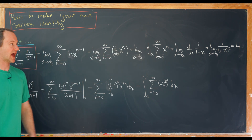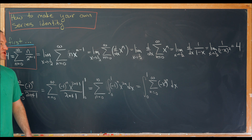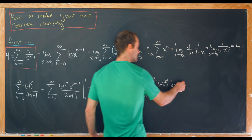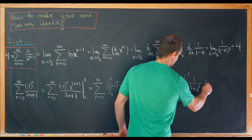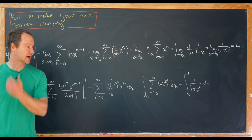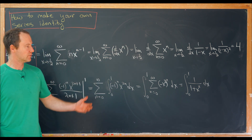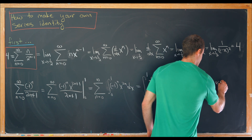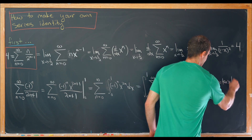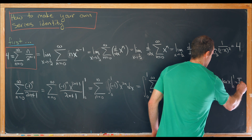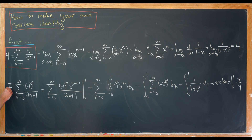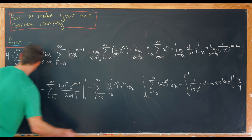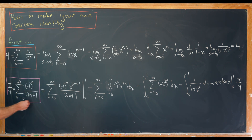Instead of the common ratio being x like before, the common ratio is now minus x squared. So this sums to 1 over 1 minus the common ratio, which is 1 over 1 plus x squared. Taking the antiderivative, we get arctan of x evaluated between 0 and 1, which gives us pi over 4. Let's box that result, as this will be the second portion of the identity we build.